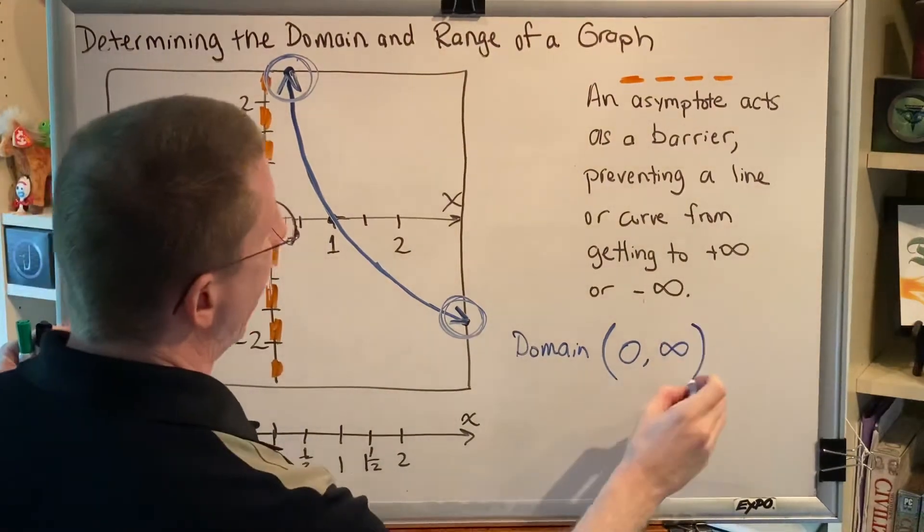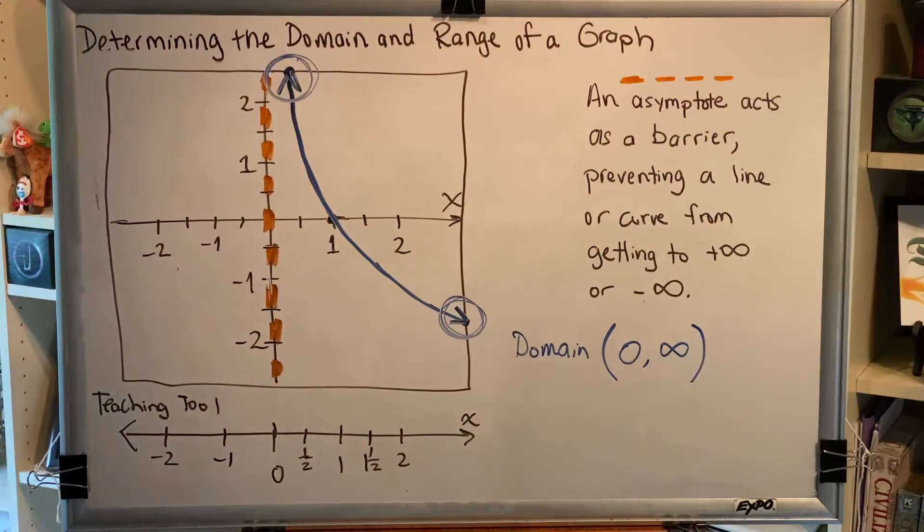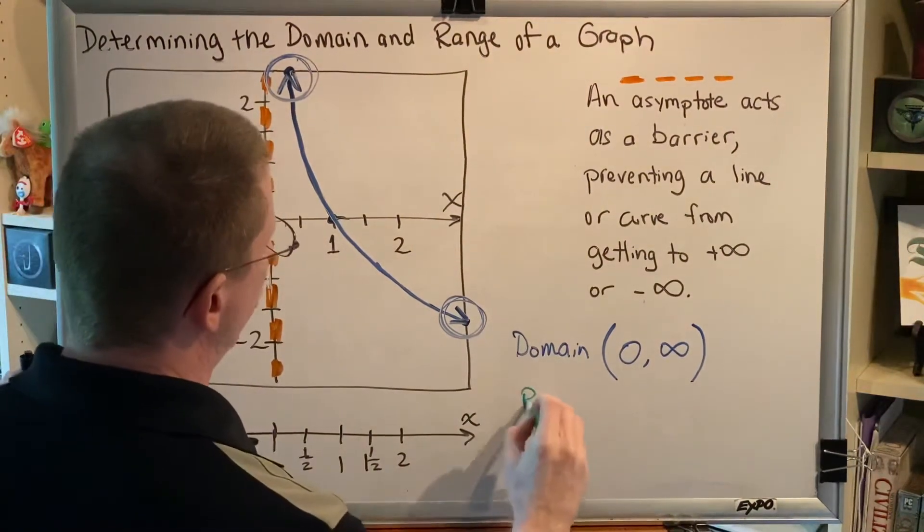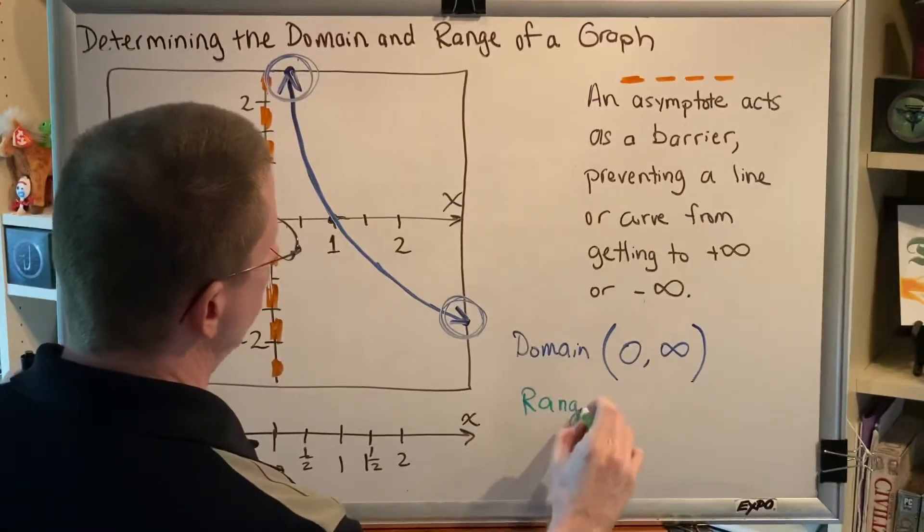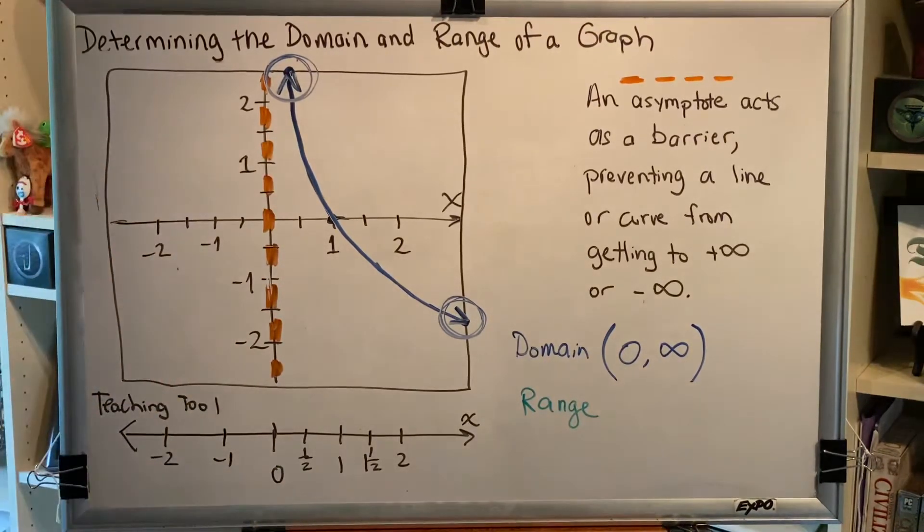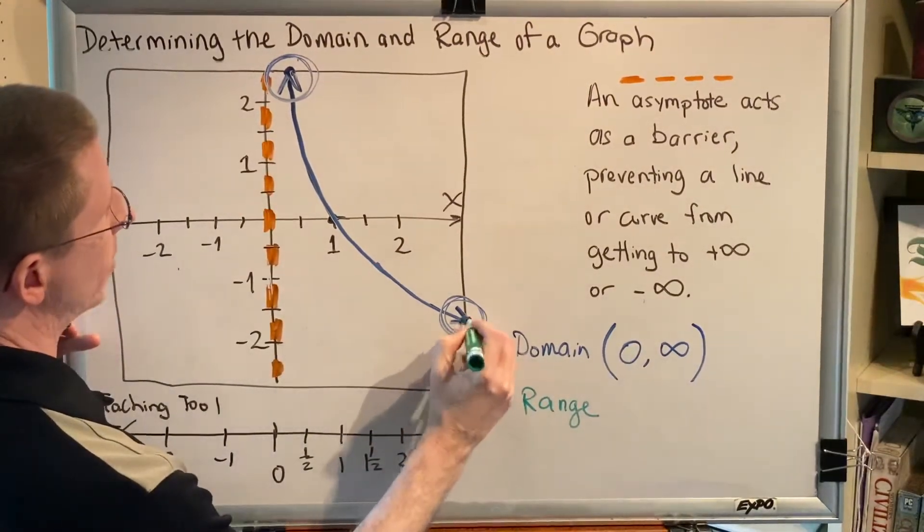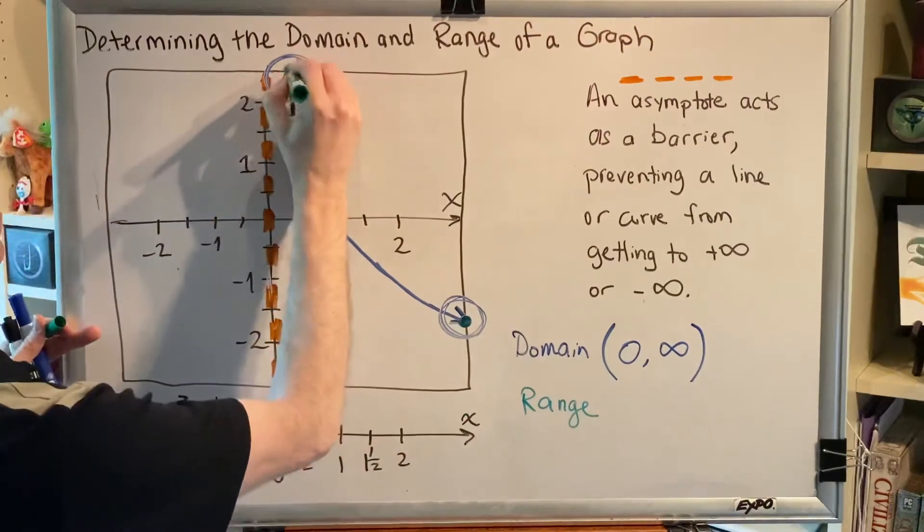And then of course infinity and negative infinity always get the parenthesis symbol. All right, now we turn our attention to range. If domain is a measure from left to right, range is a measure from down to up.